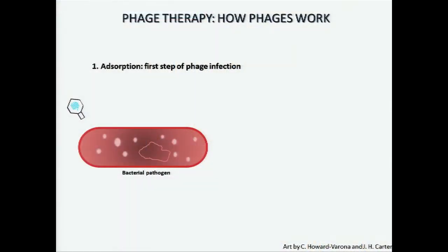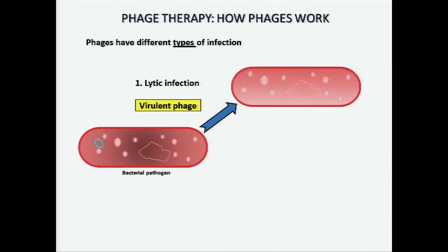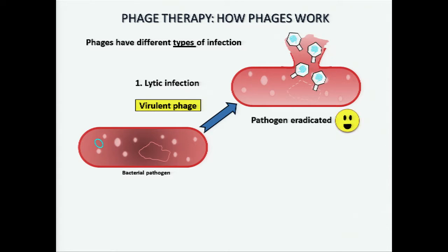The first step of a phage infection is called adsorption — when the phage attaches to the bacterial cell and introduces its DNA inside. From there, phages can have different types of infection. A virulent phage undergoes a lytic infection, where it multiplies inside the cell and then breaks it open, or lyses the cell, eradicating the pathogen.